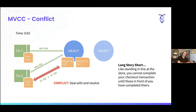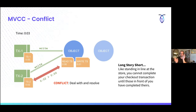Typically what happens here is you get a transaction retry. You need try-catch blocks around these things so that you can handle the error return. This is really the magic of MVCC — the concept of having temporary objects and two timestamps so that you can prepare these things and understand when and where they're going to happen. Long story short, each transaction is going to happen like you're standing in line at a store — you can't complete one transaction until the last one is done against one of these objects.